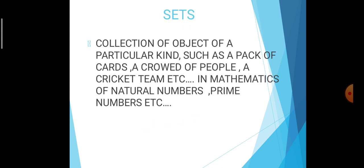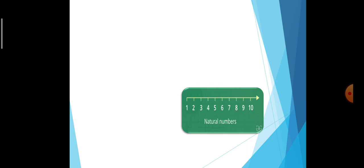Sets are a collection of objects of a particular kind, such as a pack of cards, a crowd of people, a cricket team, etc. In mathematics also, natural numbers, prime numbers, etc. Set means a well-defined collection of objects. For example, what are the first 10 natural numbers? It is well-defined, so it is a set.